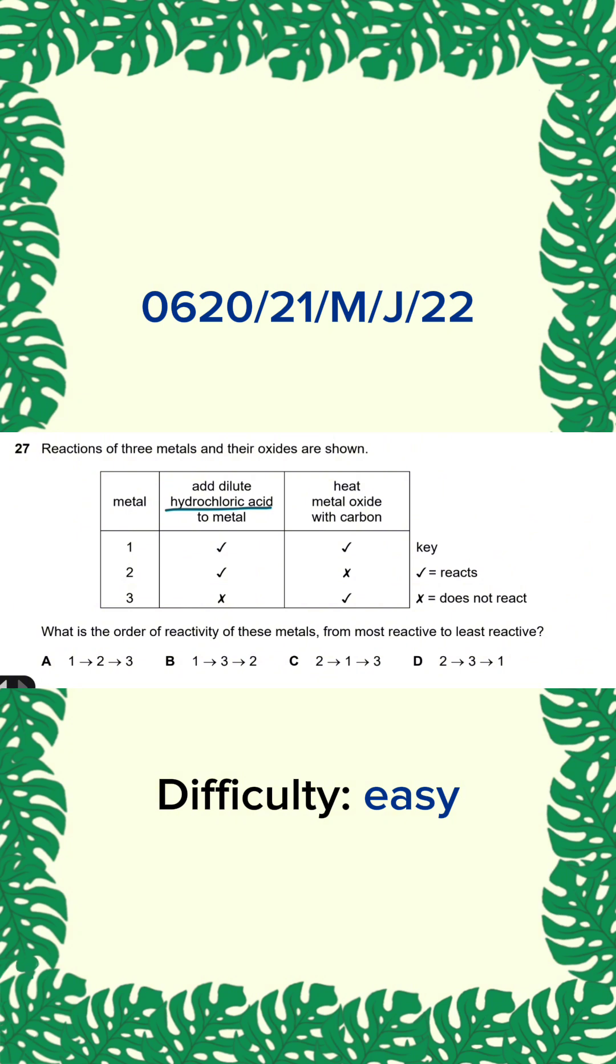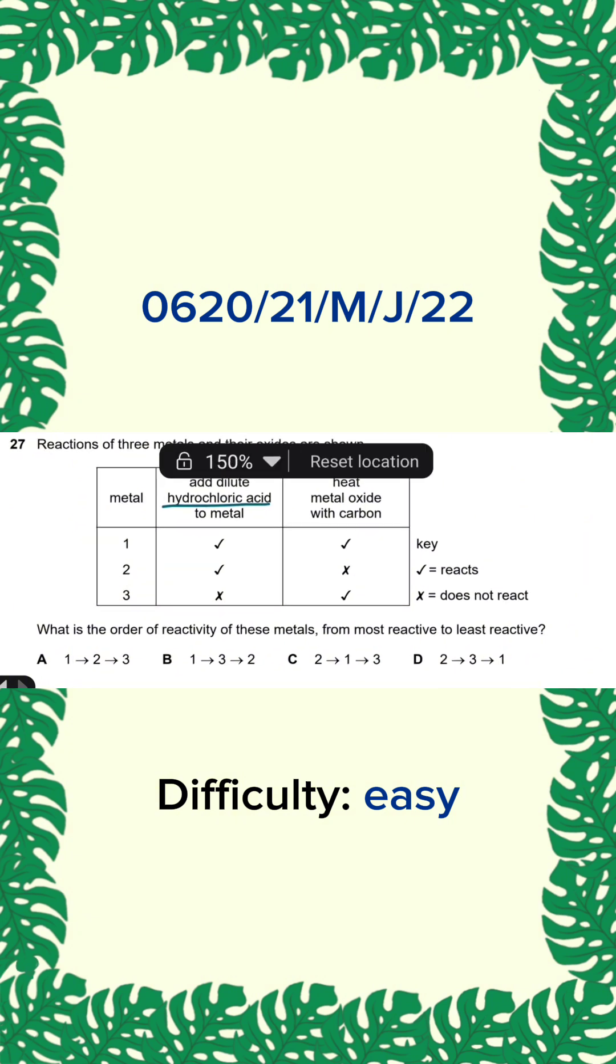Okay, so if carbon is below the metal in the reactivity series, the metal will not react with carbon because carbon cannot displace a more reactive metal. But if they were below carbon in the reactivity series, this means that carbon is more reactive and it can displace it.